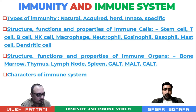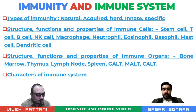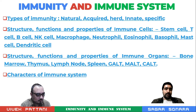We will also discuss the structures, functions and properties of the immune organs like bone marrow, thymus, lymphoid, spleen, GALT, MALT, and CALT. And at the last we will also discuss the characters of the immune system.